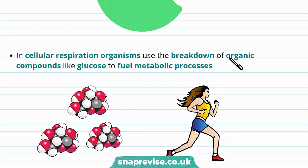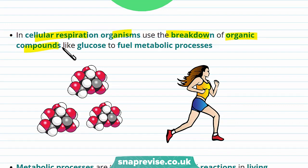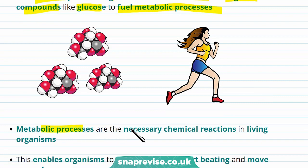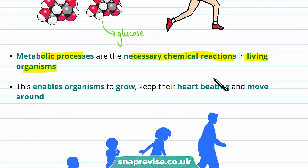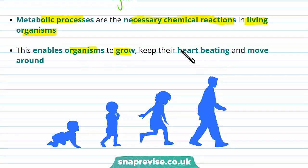Both reactions need to break down glucose to get energy, and this is done with specific enzymes. In cellular respiration, organisms use the breakdown of organic compounds like glucose to fuel metabolic processes — the necessary chemical reactions in living organisms. This glucose is broken down and the energy released is used for basic life processes, including enabling organisms to grow, keeping their heart beating, and enabling them to move around.